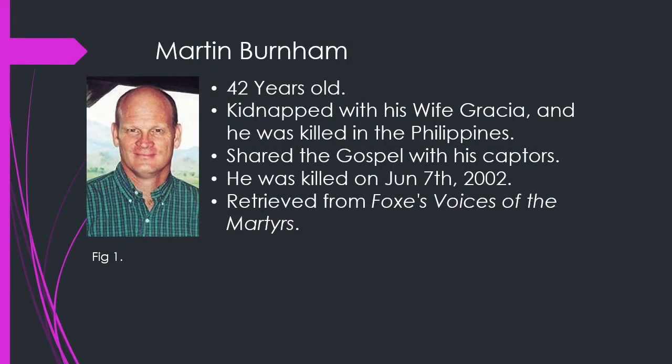The first American royalty is Martin Burnham. Martin and Gracia Burnham were missionaries to the Philippines. They were taken captive for months by Muslim extremists, but kept their faith and kept praying. Martin even shared the gospel with his captors. Three days before his death, Martin wrote a letter to his children telling them how much he loved them and to keep their faith. As the Philippine army closed in on the guerrilla group, the leader ordered them to kill the Americans. Martin and two others were killed. His wife carried on sharing the gospel after his death and telling of his story.